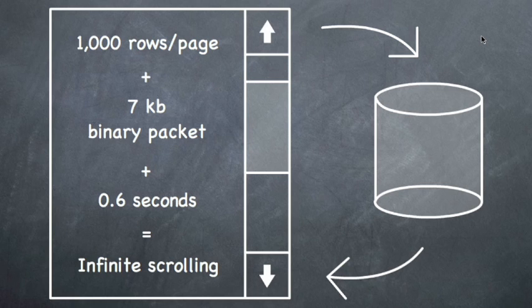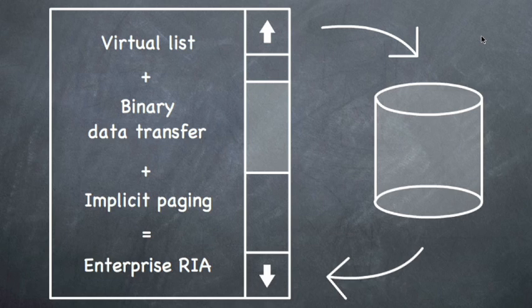If you kind of step back and apply this in a larger set, what you're looking at is you take virtual lists, binary data transfer, and this implicit paging approach. What you've got for yourself is an enterprise RIA. An RIA that's capable of scaling to any enterprise needs. So, that's implicit paging. That's it for this session in the RIA Problems series. Check back again soon. Until then, I'm Kevin Hoyt.